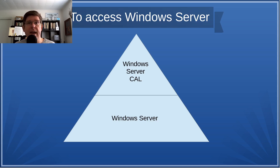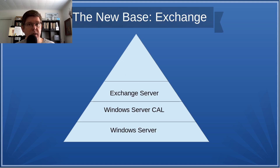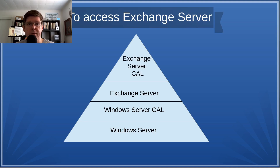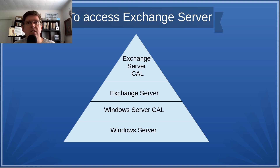Some products have a CAL model themselves, and an example of this is Exchange. If you're wanting to run on-premises Exchange, you're obviously going to be running that on a Windows Server. So to figure out if you need Windows Server CALs — the answer is yes. You have Windows Server, which is license plus CAL, and then you buy Exchange. But Exchange also has a CAL model, so if you want users accessing Exchange, you're going to have Exchange Server CALs. There are some other details regarding Exchange Server CALs, such as external users and whether or not they need a CAL, but that's beyond the scope of this video.